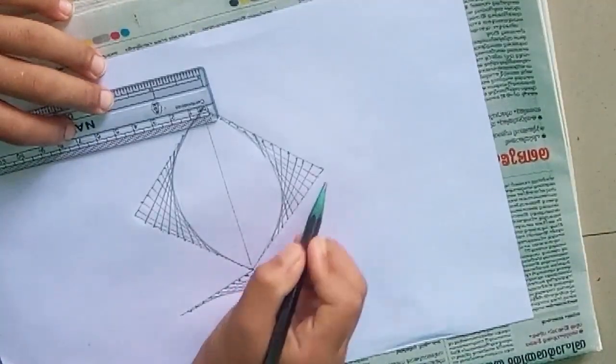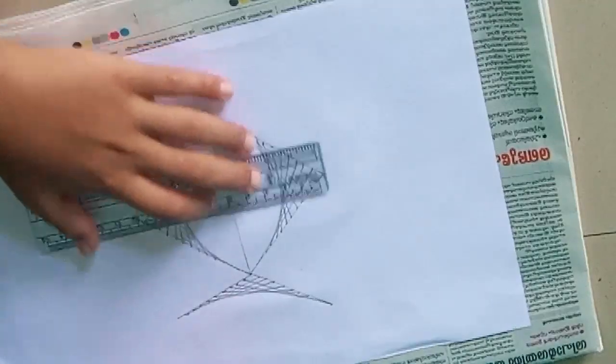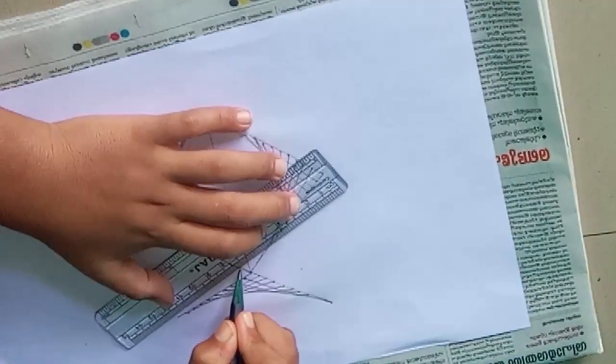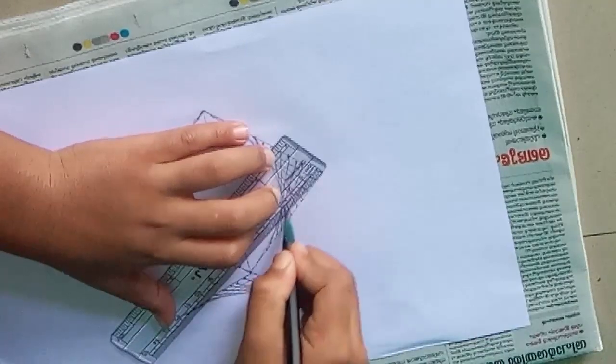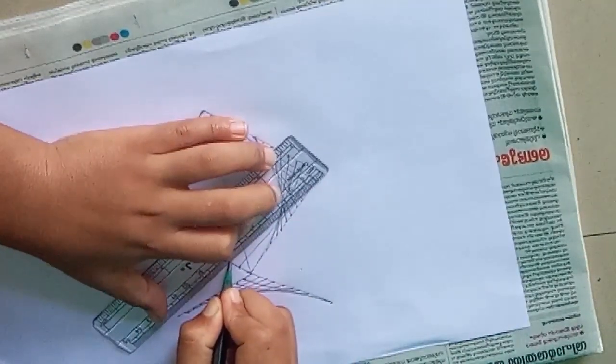We will get this shape. Then join both these sides with the scale in this way.